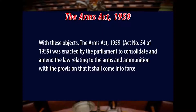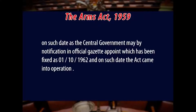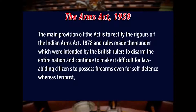personal security, and self-defense, when an emergent situation cannot be controlled except by the use of a firearm within statutory limits. With these objects, the Arms Act 1959, which is Act No. 54 of 1959, was enacted by the Parliament to consolidate and amend the law relating to arms and ammunition, with the provision that it shall come into force on such date as the central government may specify in the official Gazette, which has been fixed as 1-10-1962. The main provision of the Act is to rectify the rigors of the Indian Arms Act 1878 and the rules made thereunder,